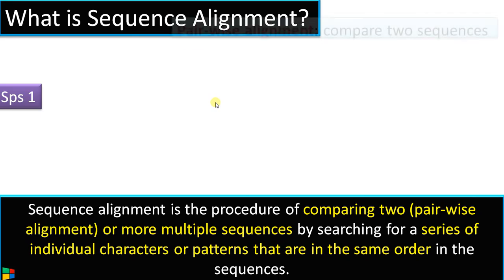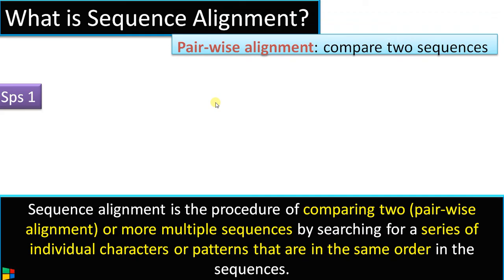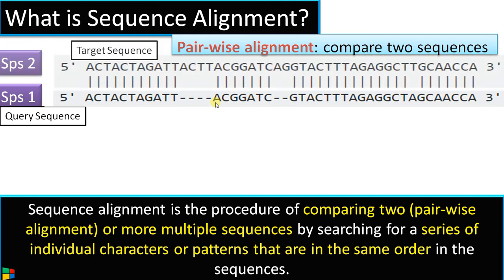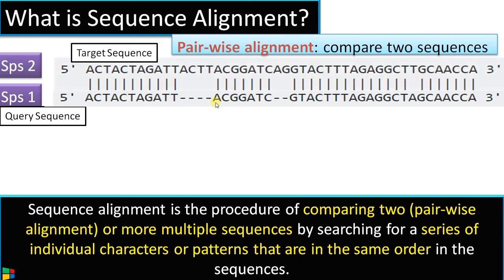The first type of alignment is called pairwise alignment, where two sequences are compared or aligned. The first sequence is the query sequence, and the target sequence — the second sequence from species 2 — is aligned against species 1. Matches are represented as solid lines and mismatches as dots or gaps. When two sequences are aligned like this, it is called pairwise alignment.